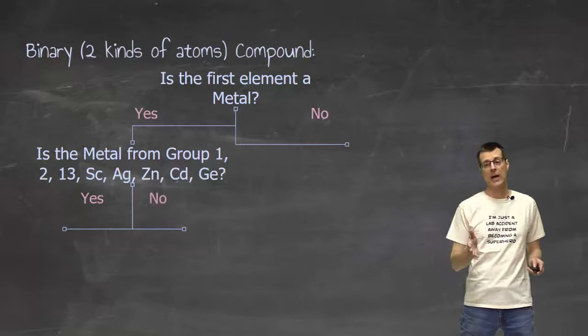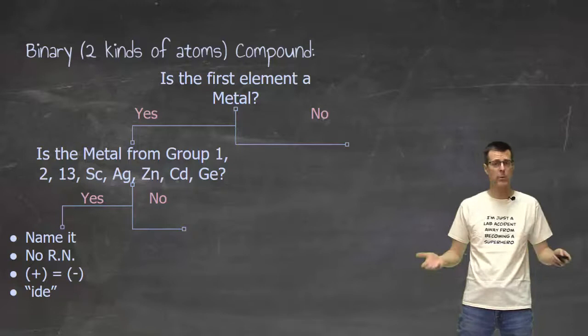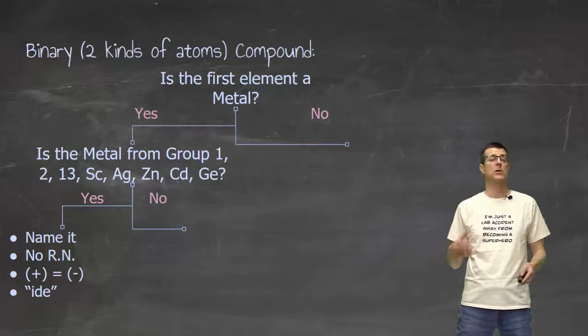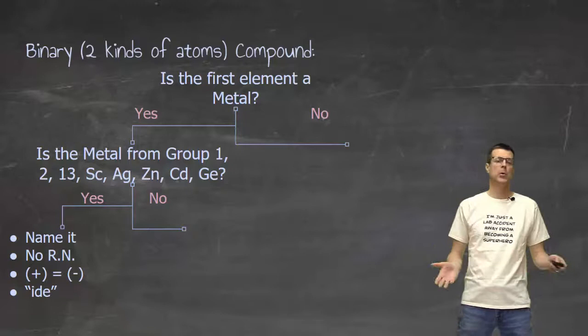If the answer is yes, it is one of those metals, then we go back to week 1, where all we have to do is name it. No Roman numeral. Total positive charge has to equal total negative charge, and the nonmetal is going to end in IDE. And I realize I'm mixing in both the names and the formula rules, but those are the things that we had to keep track of.